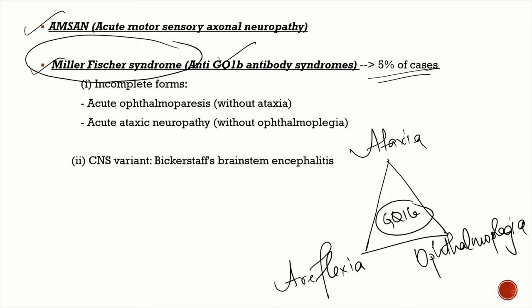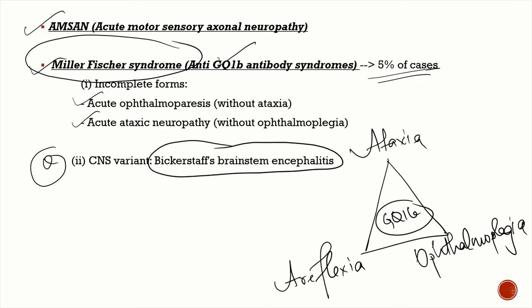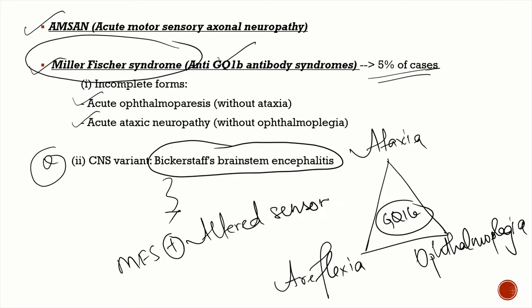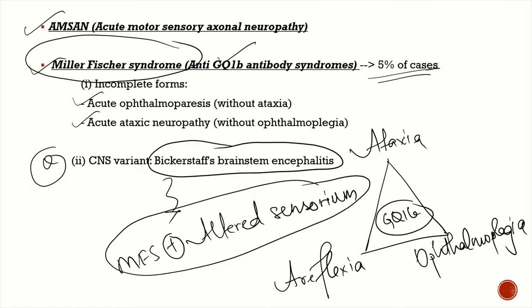Incomplete forms of Miller-Fisher Syndrome exist: acute ophthalmoparesis without ataxia, and acute ataxic neuropathy without ophthalmoplegia. An important MCQ: the CNS variant of the anti-GQ1b antibody spectrum is Bickerstaff's encephalitis, where a patient with Miller-Fisher Syndrome also has altered sensorium.